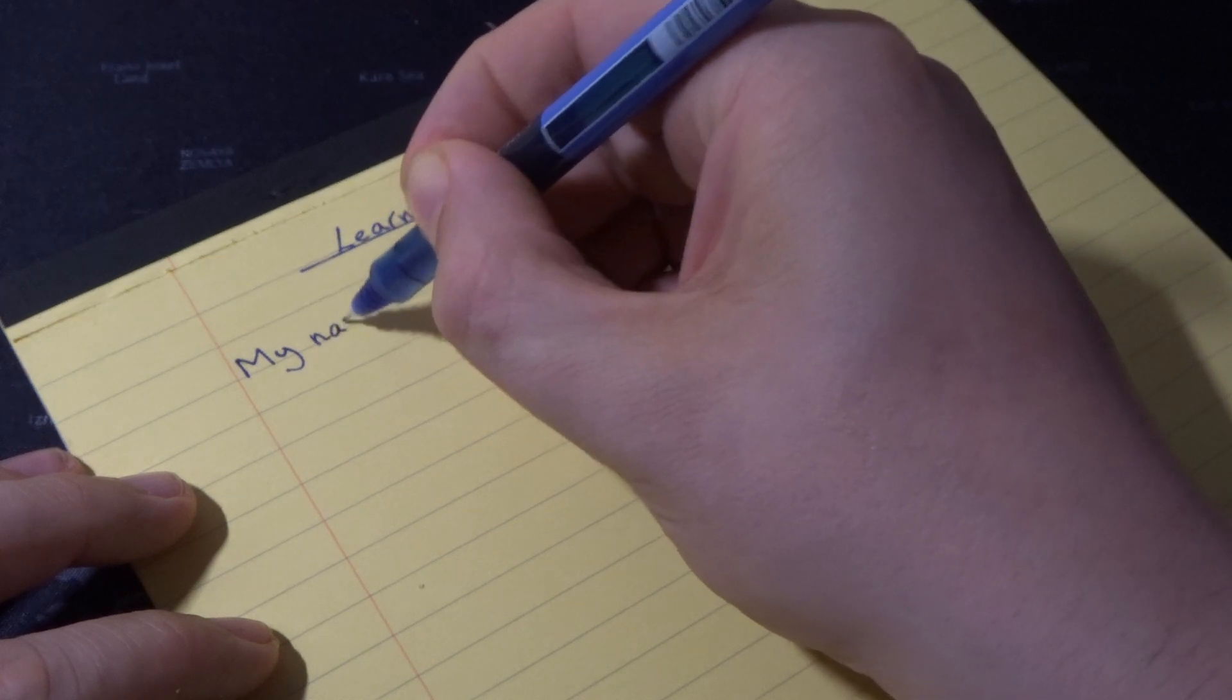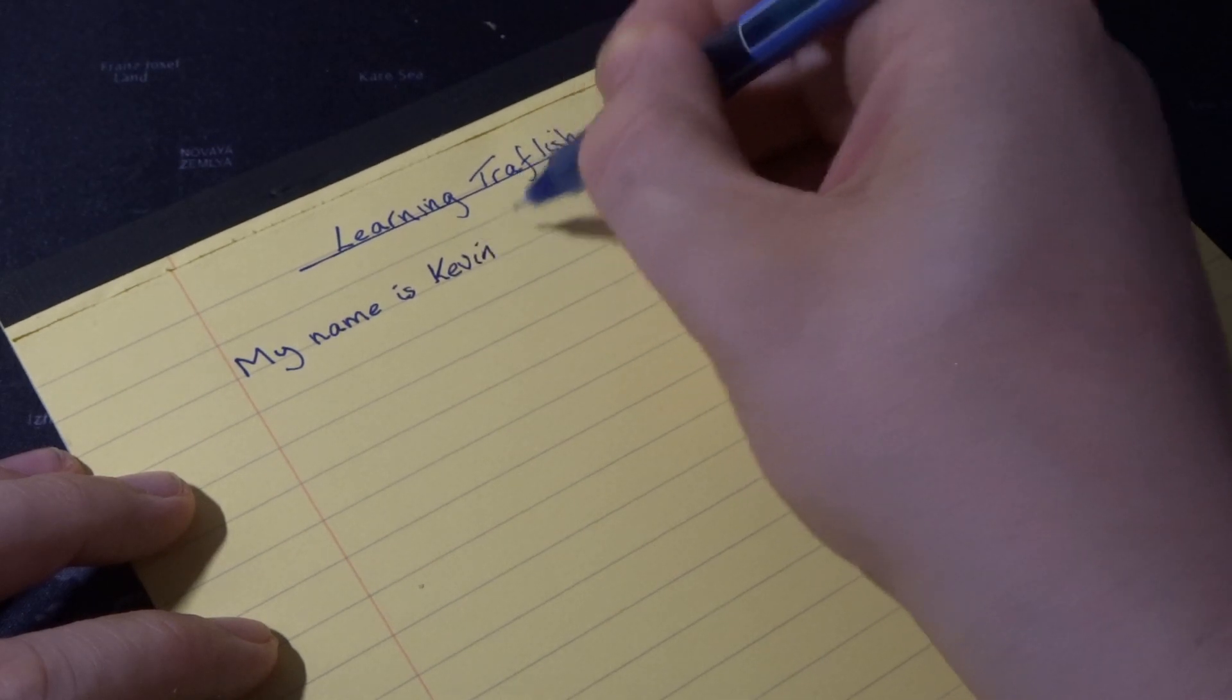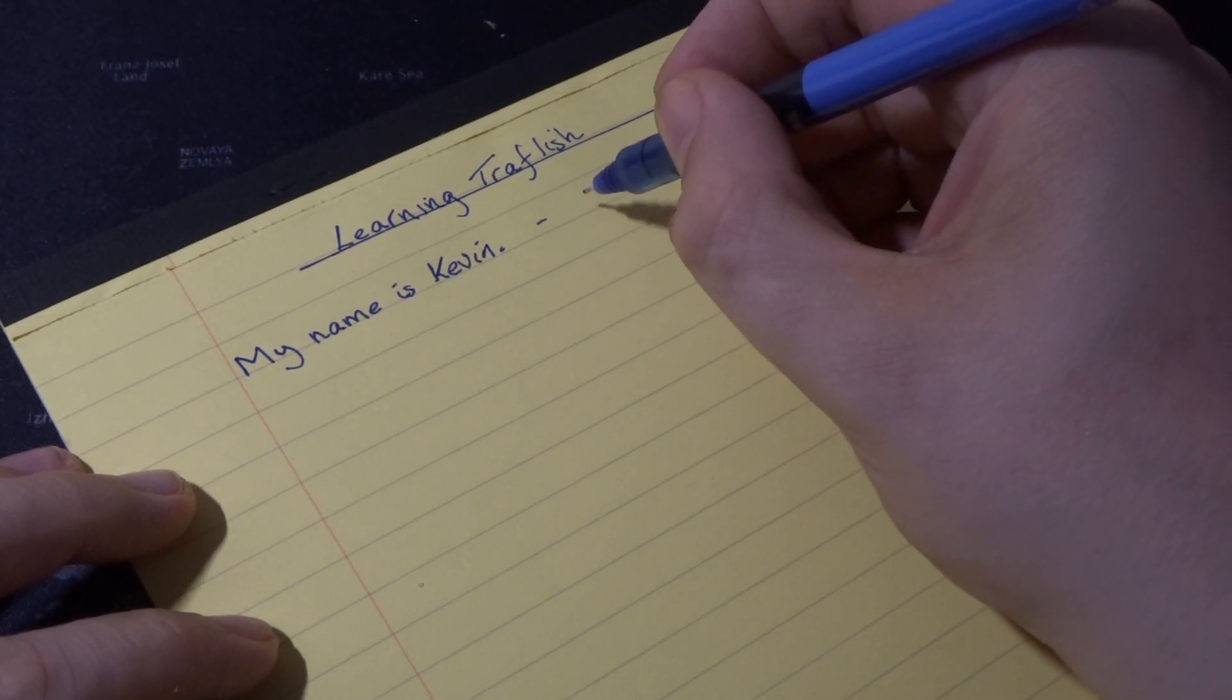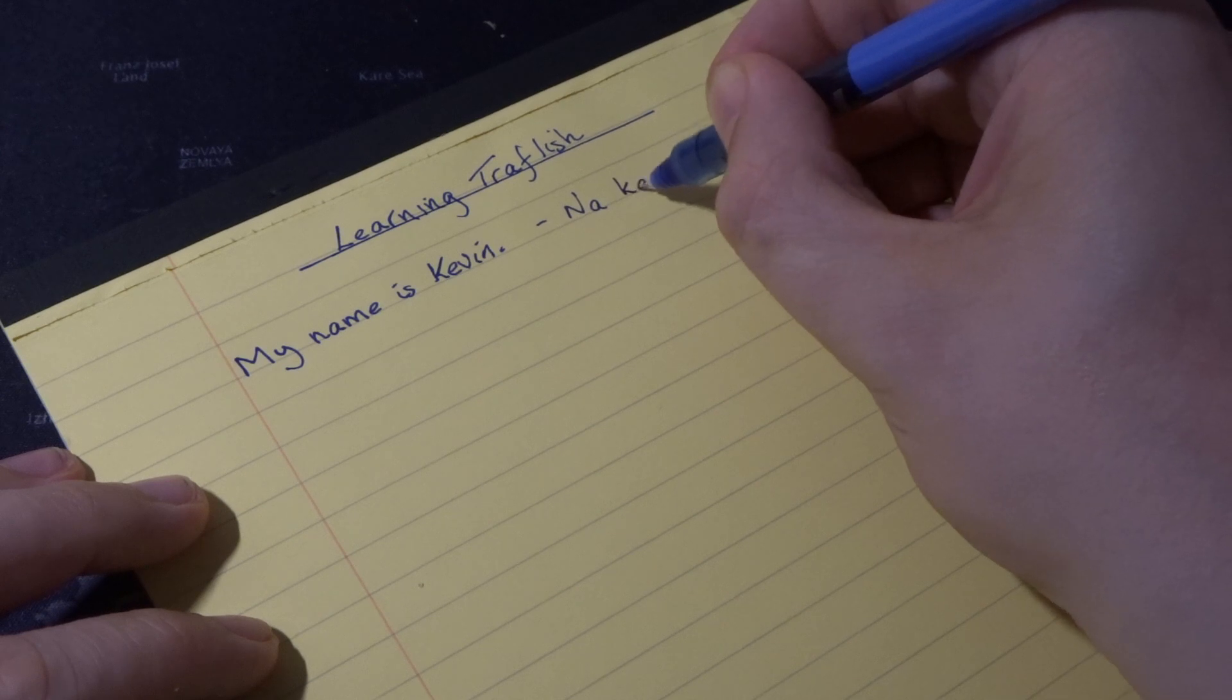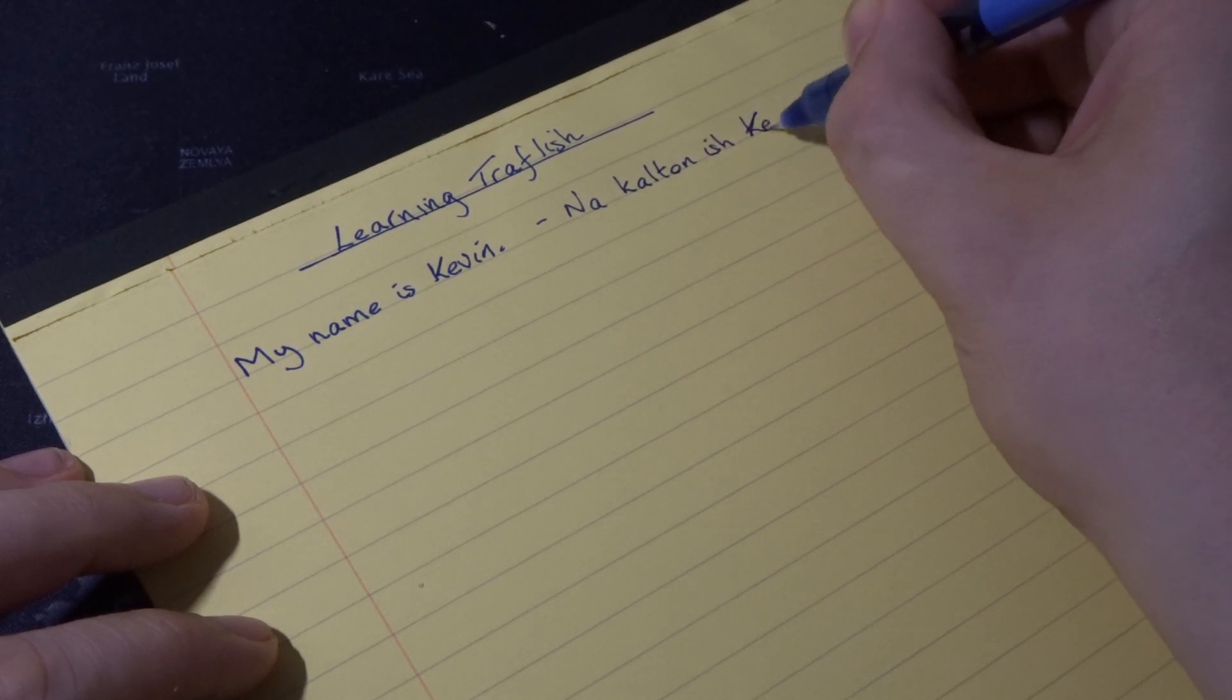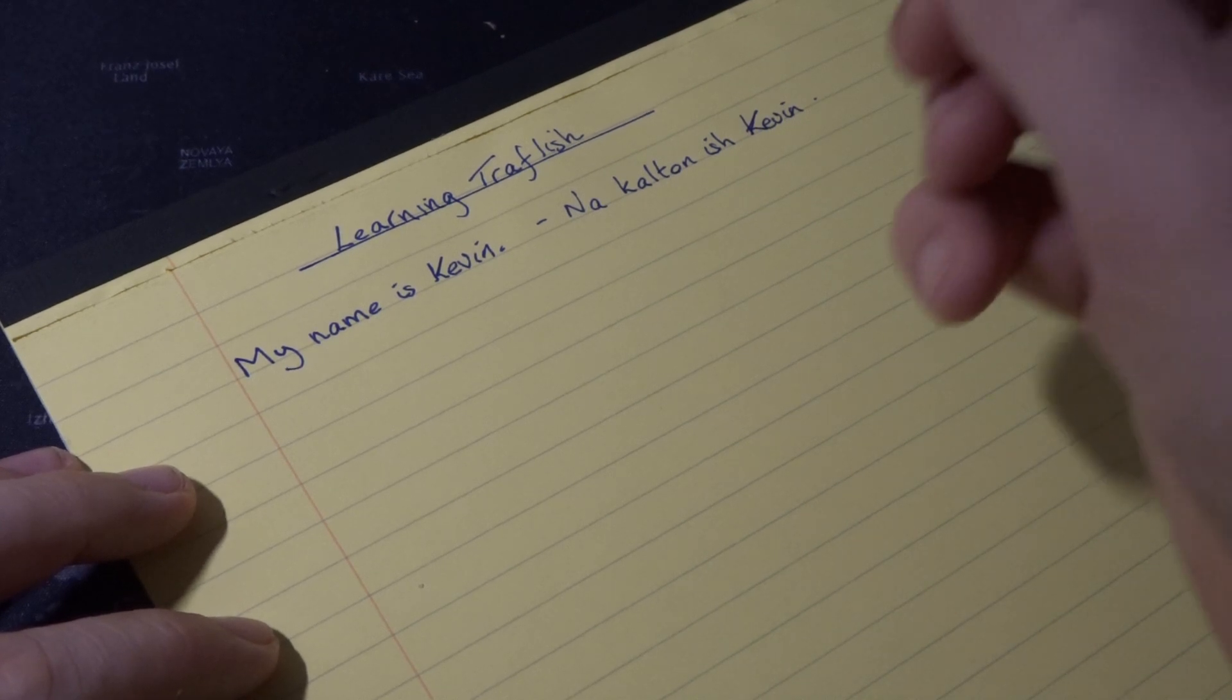So the first sentence in English: my name is Kevin. Start off nice and easy. And in Travelish that is na kalton ish Kevin.